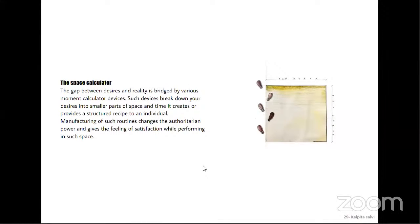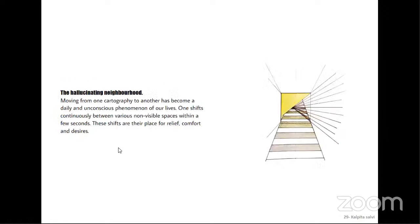The third operative concept is the space calculator. The gap between desires and reality is bridged by various movement calculator devices. Such devices break down desires into smaller parts of space and time, creating a structured recipe for an individual. Manufacturing such routines changes the authoritarian power and gives a feeling of satisfaction while performing in such spaces. The fourth concept is the hallucinating neighbor — moving from one cartography to another has become a daily, unconscious phenomenon, with one shifting continuously between various non-visible spaces within seconds — spaces of relief, comfort, and desire.